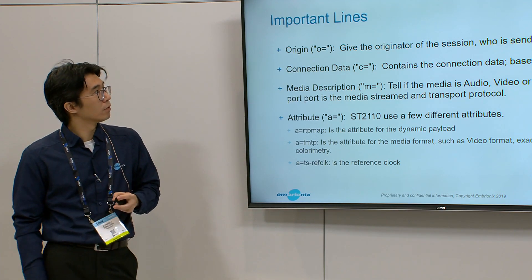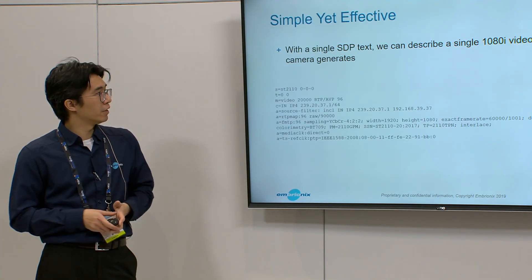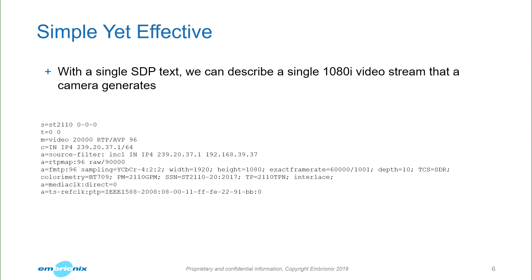In maybe 10 lines, you can be describing a single 2110 1080i video. So you have the media level starting here. We have a video RTP on port 20,000. We're connecting, setting that to a 229 multicast.